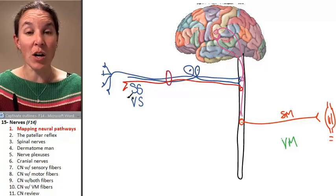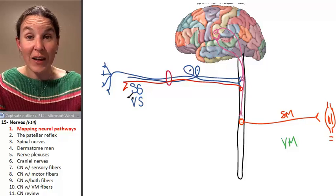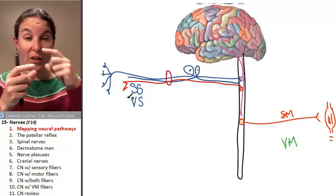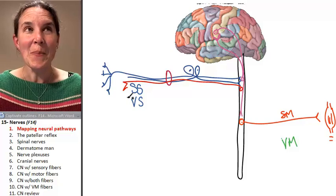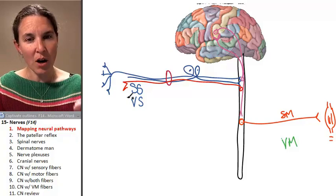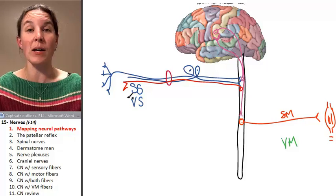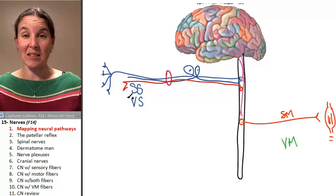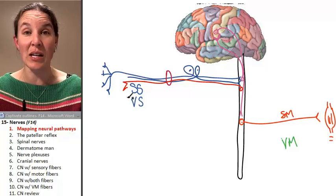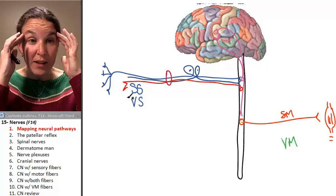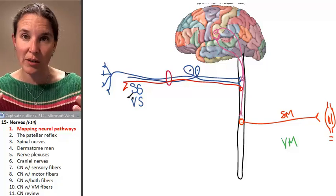So our nerves are combinations of all the different flavors of neurons, all the different flavors of their axons. Do you get the concept that our nerves are going to be highways through which all these axons pass, allowing information to go in and out? By the time we finish this lecture, hopefully that concept is crystal clear in your brain.